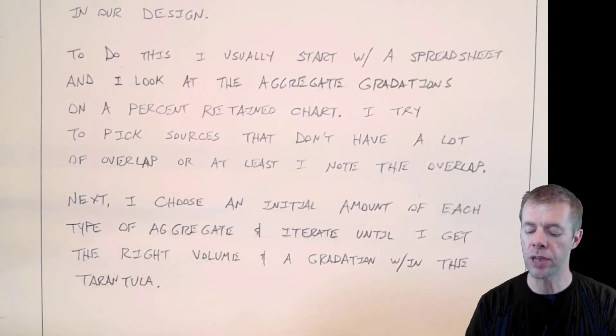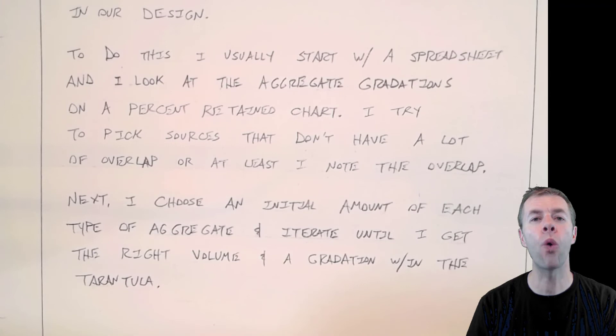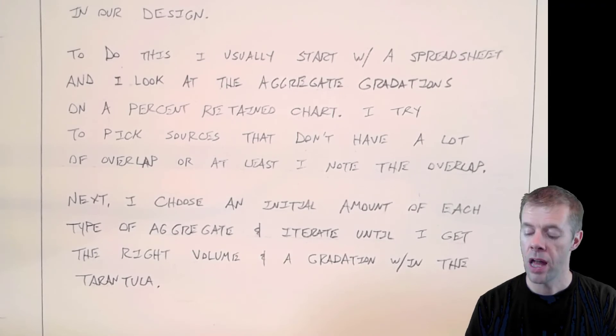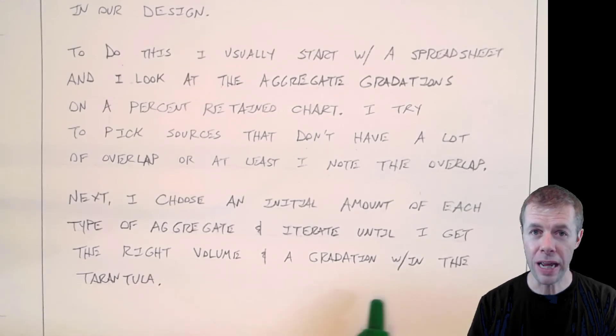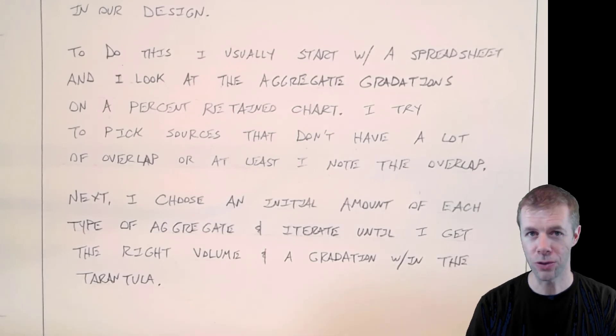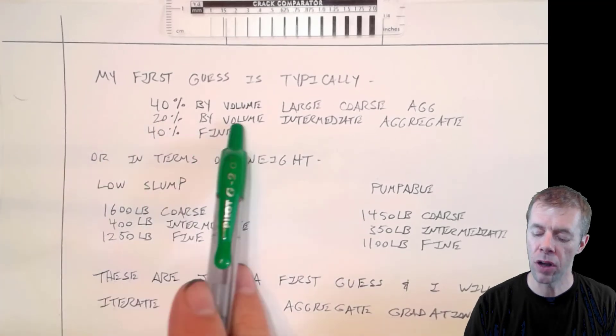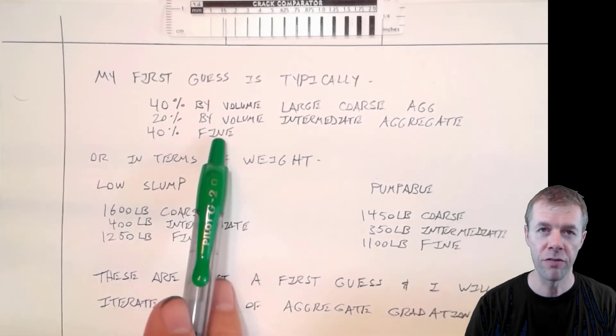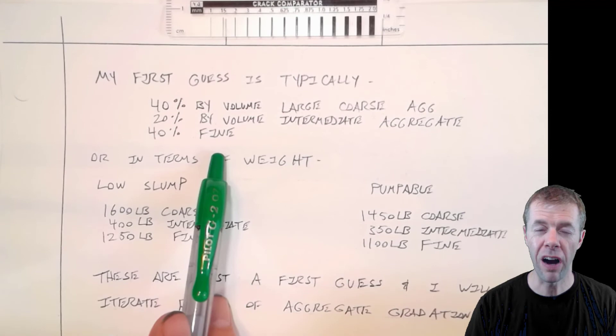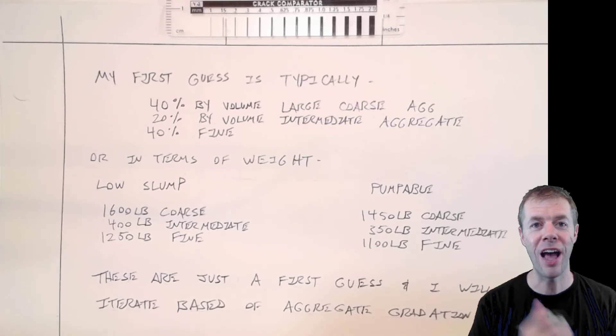Next, I choose an initial amount of each type of aggregate. This is a guess. A pure guess based on experience. It may be a totally horrible guess, but I'm going to start with something. Then I'm going to iterate until I get the right volume, 27 cubic feet, and gradation that is within the Tarantula Curve. So typically, when I make my first guess, I assume that I have about 40% coarse aggregate by volume, and I have 20% intermediate aggregate by volume, and I have 40% fine. That's just a first guess. That doesn't mean it's going to work. That doesn't mean it's going to be right. It's just a first guess to get you started.